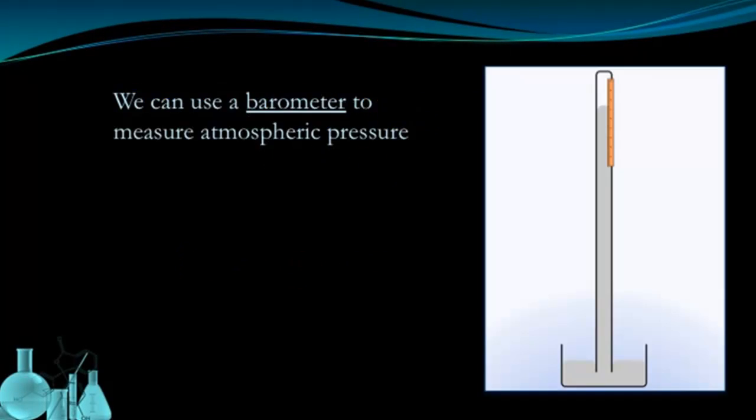And we can use a device called a barometer to measure atmospheric pressure. Here we have a simple diagram of a barometer. Essentially what a barometer is, is a container of some kind, filled with a liquid. And the liquid in this container is mercury.